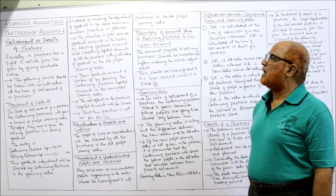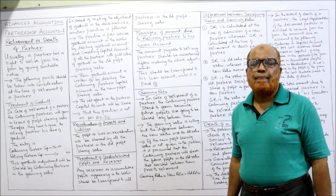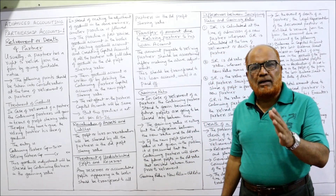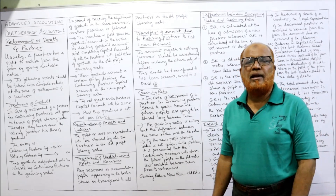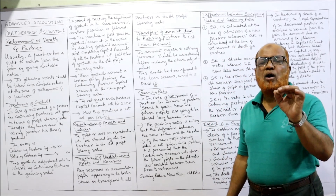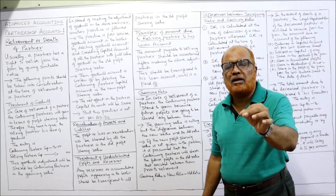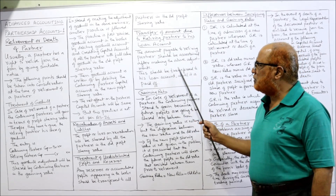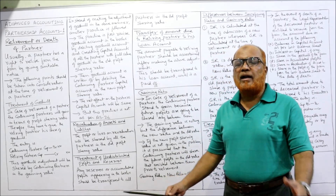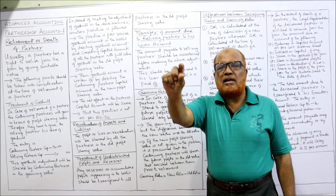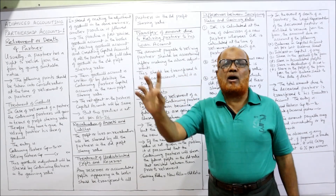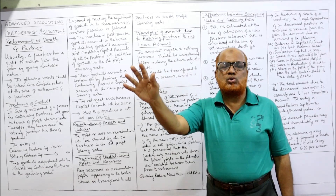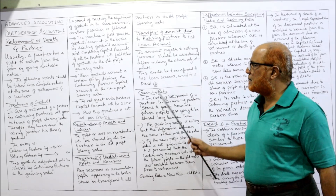The next adjustment is the transfer of the amount due to the retiring partner to his loan account. Normally the whole amount due to the retiring partner will not be immediately paid — it may be partly paid and the remaining amount will be treated as a loan to be paid later in the future. The amount due to the retiring partner should be ascertained after making all adjustments. The entry for transferring is: retiring partner's capital account debit, retiring partner's loan account credit. By passing this entry, the retiring partner's capital account will get closed and that amount is transferred to his loan account.